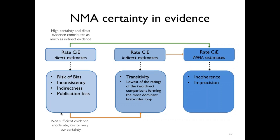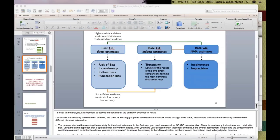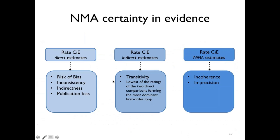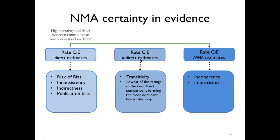This is a brief explanation of how to assess the certainty of evidence in network meta-analysis; further explanations and details can be found in the references provided with these slides. What is shown here is the general process of rating the certainty of evidence in network meta-analysis, and it is a sequential process. You rate the direct estimates and then rate the indirect estimates in case you don't have high certainty of the evidence.